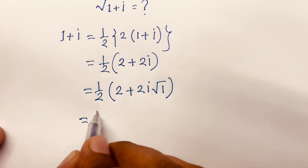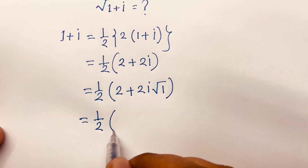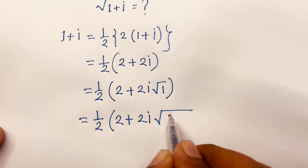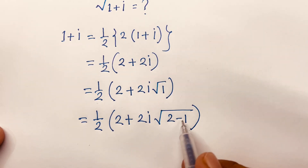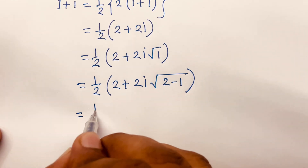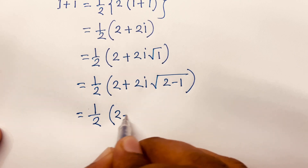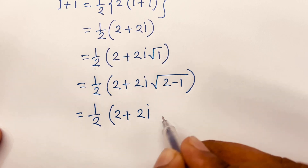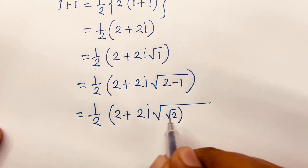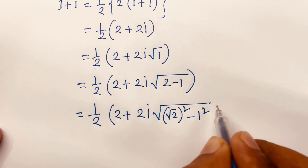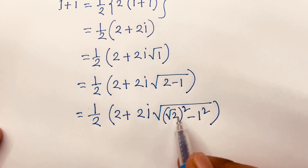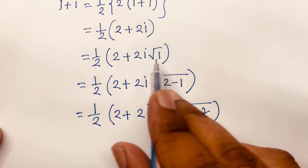Then, I can say here is 1 over 2 times 2 plus 2i, square root of 2 minus 1 — because 2 minus 1 equals 1. Then I can say 1 over 2 times 2 plus 2i, square root of (√2)² minus 1². Look, the square root is cancelled, so we find 2 and 2 minus 1 equals 1.